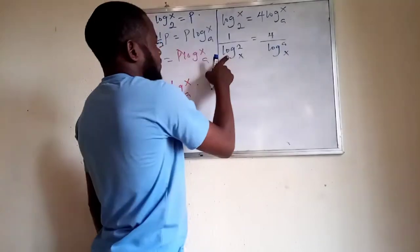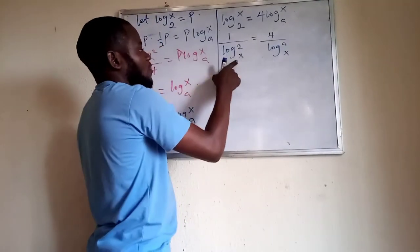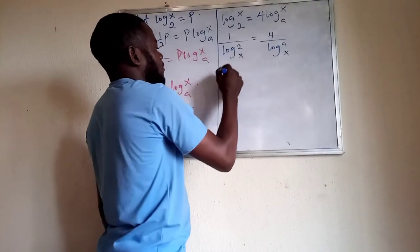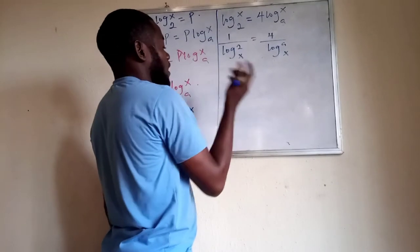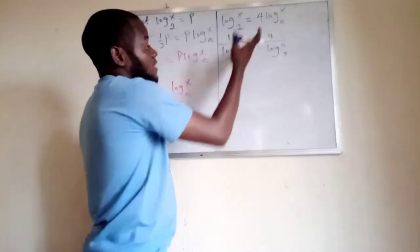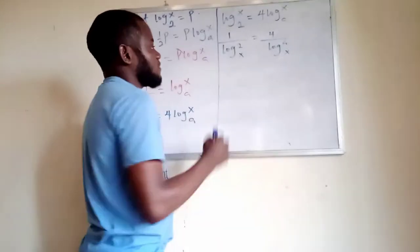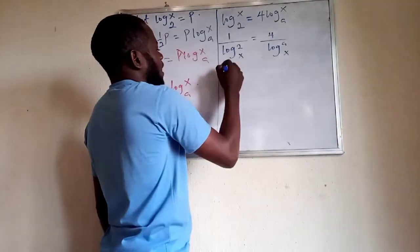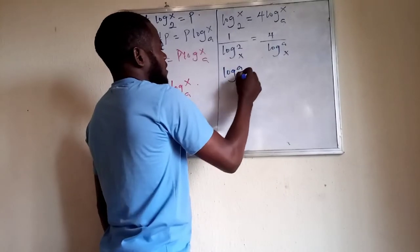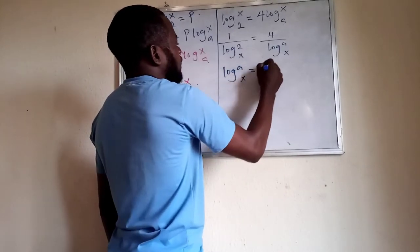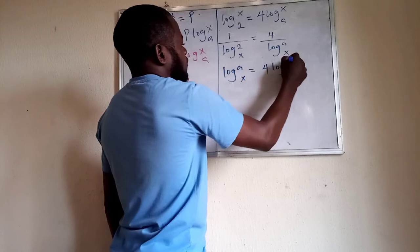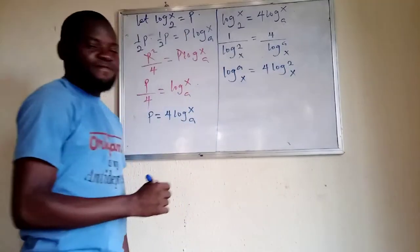Multiplying both sides by log of 2 in base x, or by cross-multiplying, we get log of a in base x equals 4 times log of 2 in base x.